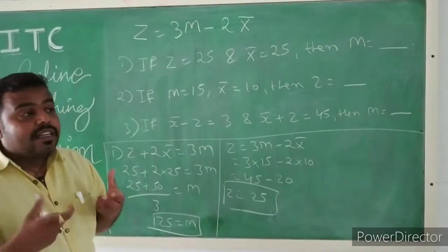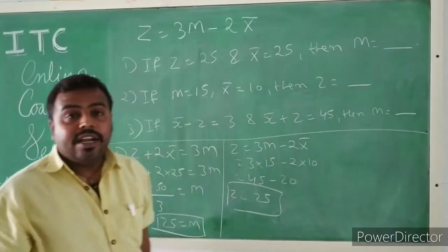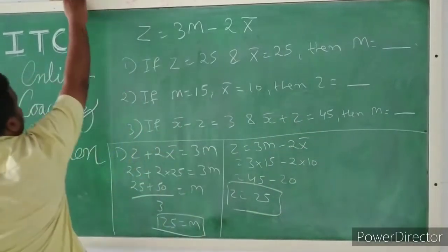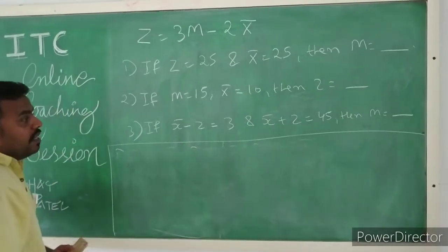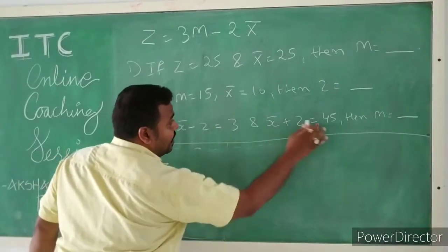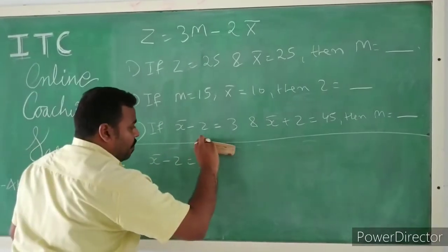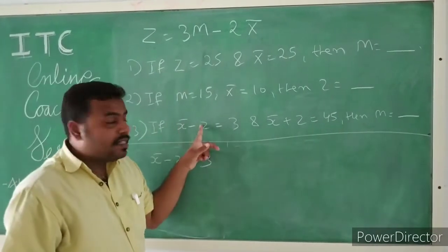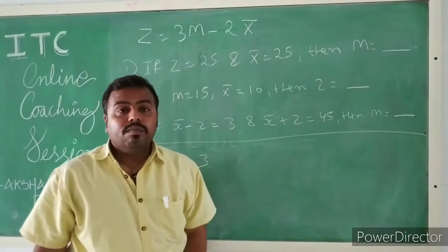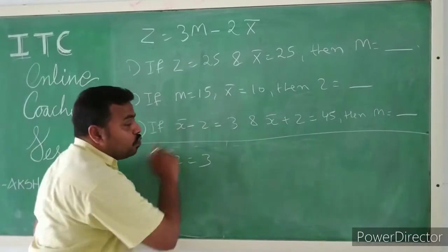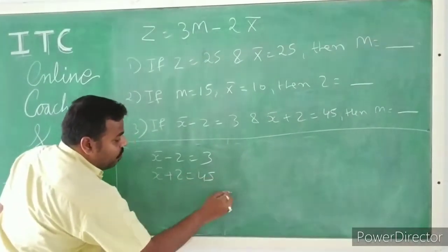Similarly, sometimes values in the form of either summation or subtraction will be given and we need to find the third parameter. For example, in the third question it is given: if x̄ − Z = 3 and x̄ + Z = 45, then median M is equal to what? We will solve these two equations by the elimination method.